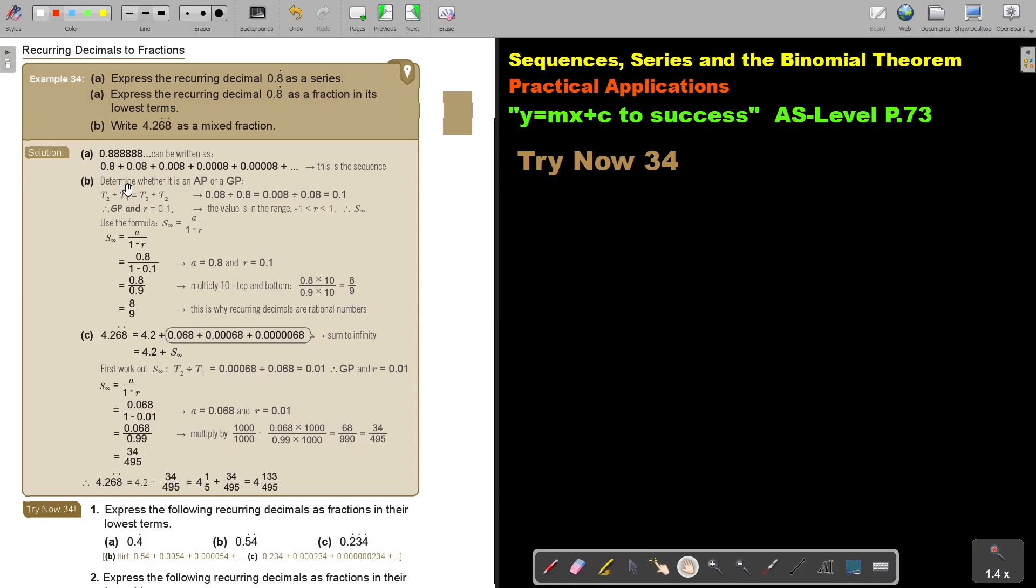So basically I'm just going to determine is it an AP or a GP? Now it's a GP because T2 divided by T1 is equal to T3 divided by T2 and that's 0.1.